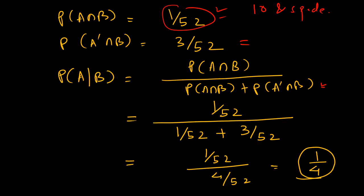Initially, using common sense we found the answer 1 by 4, and now using this formula we get the same answer. This formula is useful in more complicated problems where finding an easy intuitive solution is not straightforward. It is always good and handy to have this formula to get quick answers.